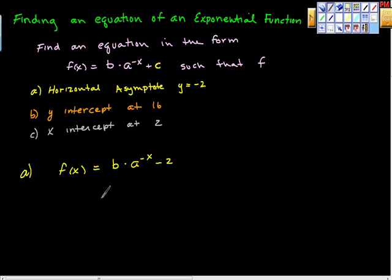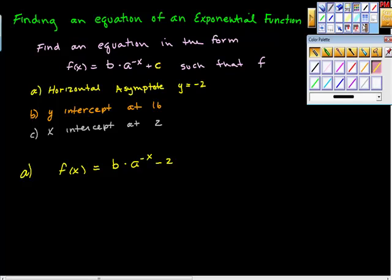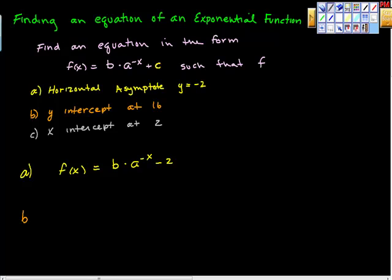The second condition we want is a y-intercept at 16. A y-intercept is the point (0, something) — it's where x equals 0. So we want f(0) to equal 16.